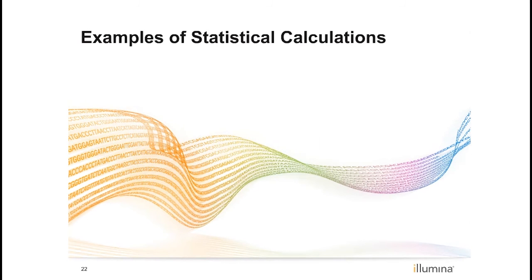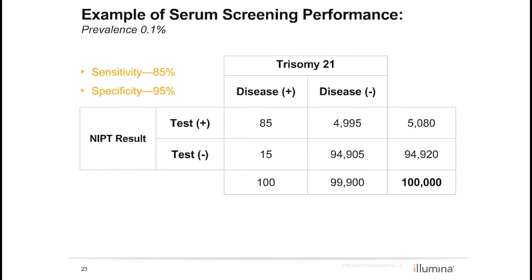The last topic in this module covers examples of statistical calculations using the performance terms discussed earlier. Using the various testing options available for aneuploidy screening, we will calculate sensitivity, specificity, positive predictive value, and negative predictive value to determine differences between the options. This example uses a screening test with 85% sensitivity and a 5% false positive rate, or 95% specificity.